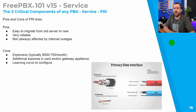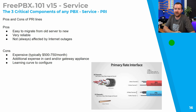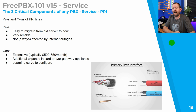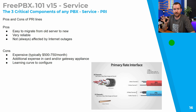Pros and cons of PRI: easy to migrate from an old server to a new one, very reliable and typically not affected by internet outages — though your mileage may vary. Cons: they're really expensive — 23 channels of voice typically in the range of $500 to $750 per month — plus additional expenses for the cards or gateway appliance. There's also a bit of a learning curve to configure a PRI in FreePBX, but really it's not that bad.